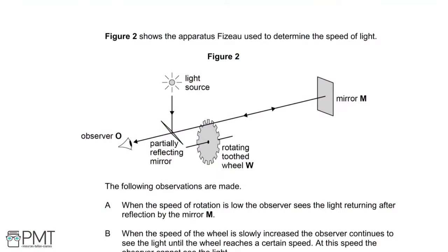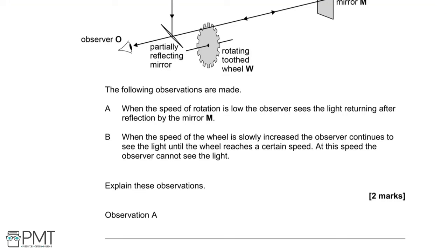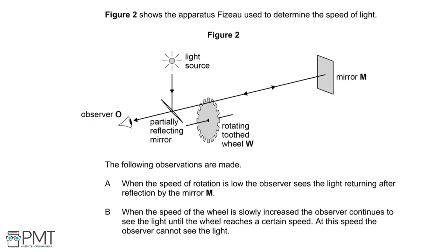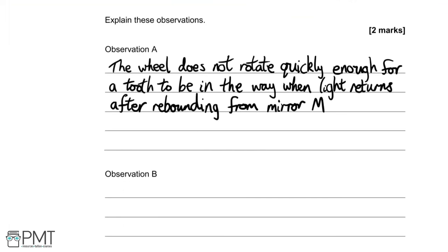Figure 2 shows the apparatus Fizeau used to determine the speed of light — a light source reflecting off a partially reflecting mirror towards mirror M, which reflects back through a rotating toothed wheel to an observer. Observation A: at low rotation speed, the light can pass through, rebound off mirror M, and pass back through the original gap before a tooth rotates into the way, so the observer sees the light. That's the first mark.